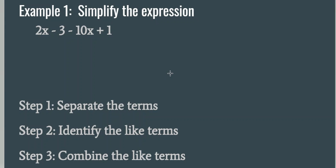Let's put this into practice. Example one, simplify the expression: 2x minus 3 minus 10x plus 1. Step one, separate the terms. Whenever I see a plus or minus sign, I'm going to draw a line and separate those terms. So I see a minus sign there, I put a line in front. I see another minus sign, I put a line in front. And then I see a plus 1 at the end, so I put a line in front. That's step one — separate the terms.